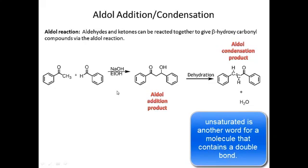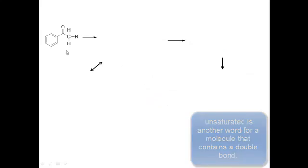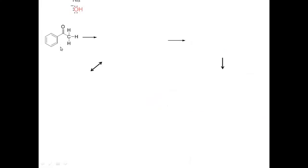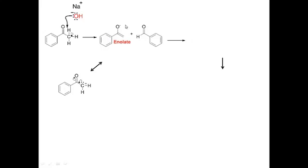Now let's talk about the mechanism. I start with acetophenone. My base comes in and deprotonates acetophenone, giving me this molecule here. This anion — this carbonyl here — can then undergo resonance to give what is known as an enolate. You can see the resonance arrows here: I break the pi bond, these electrons come here, and I get this species, which we call an enolate.